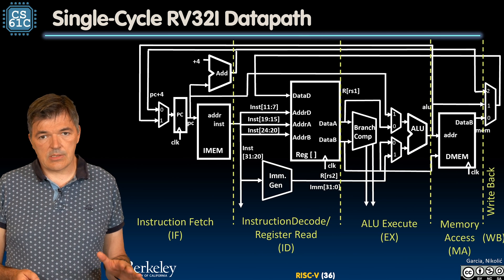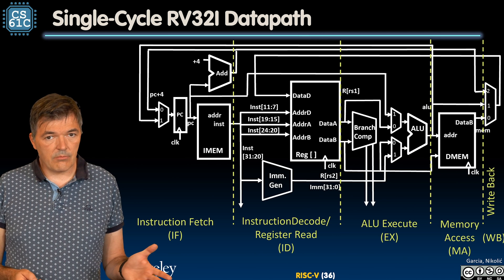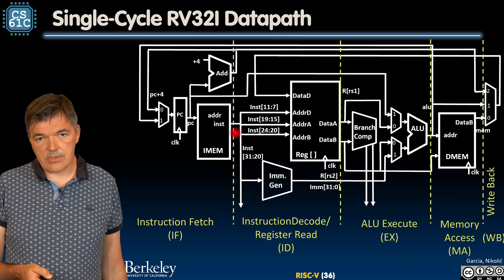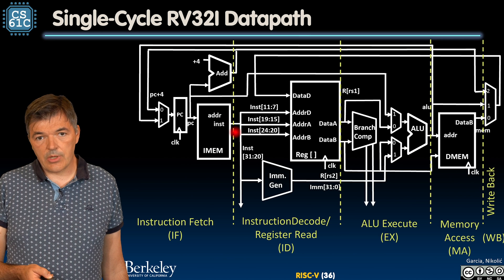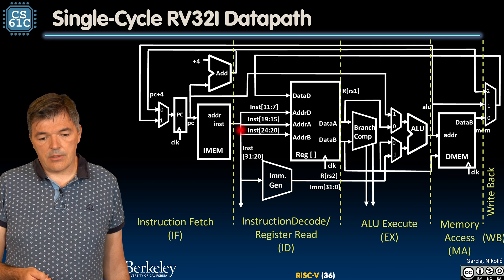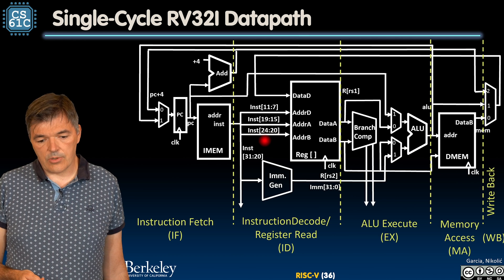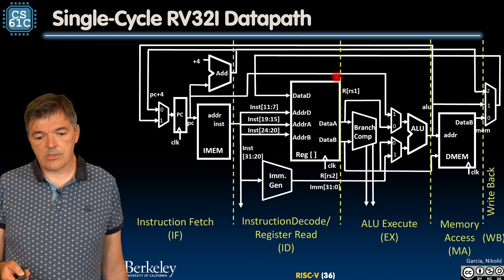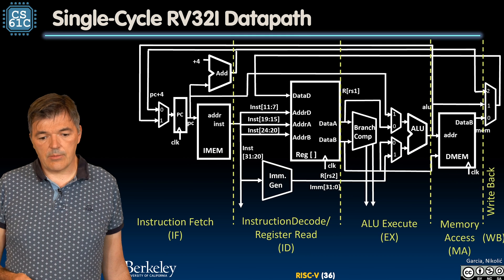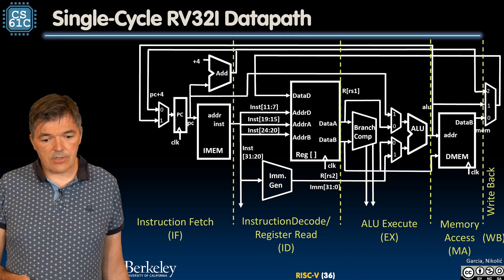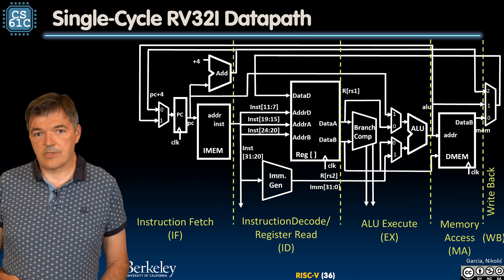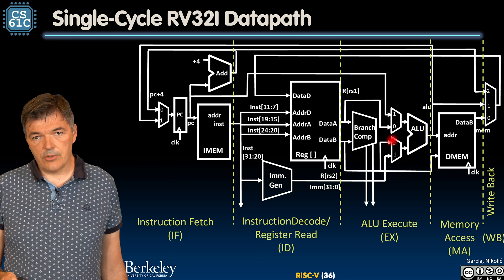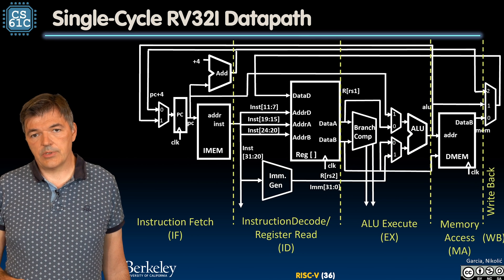As soon as the data is stable at the output, we assume that operation has been concluded. So as soon as the instruction bits are stable at the output of the instruction memory, we move on to the next stage — instruction decode — where we decode the instruction and read the registers. The registers are read like combinational logic, so as soon as those values are stable at the output of the register file, the instruction decode phase is done. We then move on to the execute phase, where we perform the ALU operation, which is done when the output at the ALU is valid.